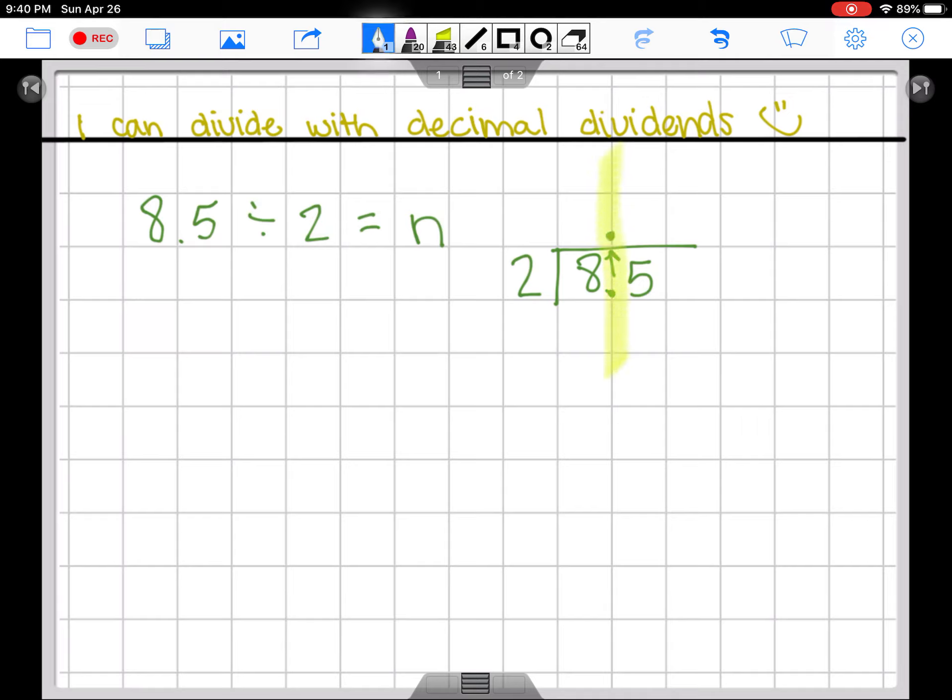It's always going to go in line. All right, team members, let's start dividing. Two can fit into eight how many times? That's going to be four. Four multiplied by two is eight. Excellent. We'll subtract. We're going to have nothing left when we subtract eight minus eight.